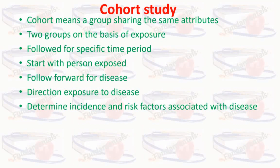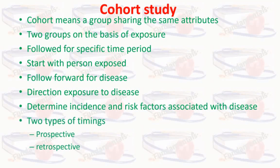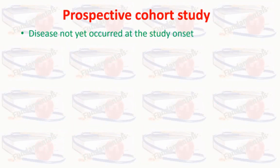The researcher aims to determine the incidence and the risk factors associated with the disease. In cohort study there are two types: prospective cohort study, also called concurrent cohort study, and retrospective cohort study, also called historical cohort study. Let's see both of them one by one.